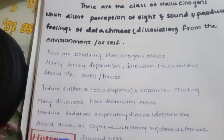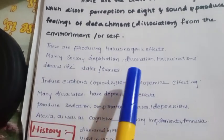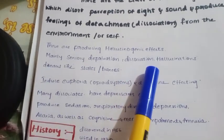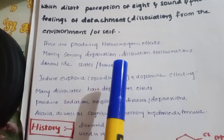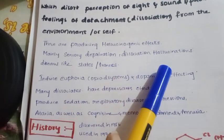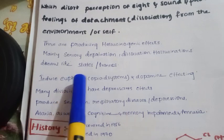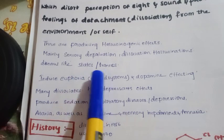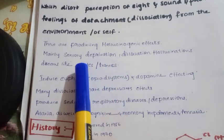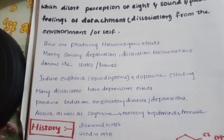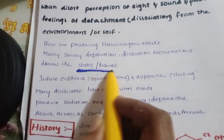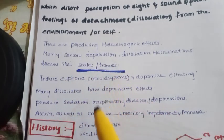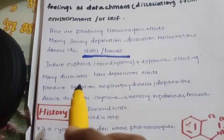These produce hallucinogens. Hallucinogens are produced mainly through sensory deprivation, dissociation, hallucinations, and dream-like states or trances. There are very important states in the trance-state.